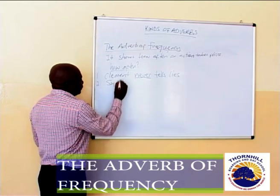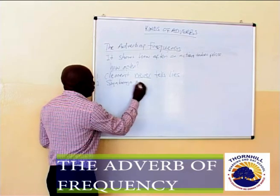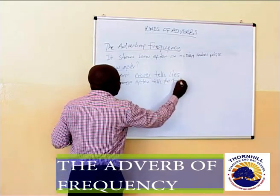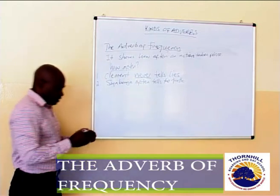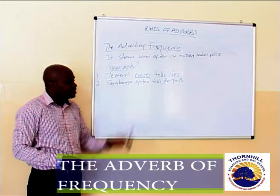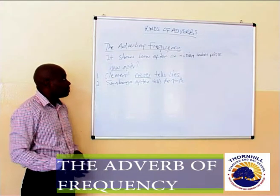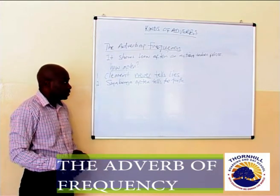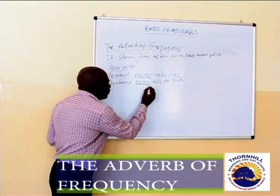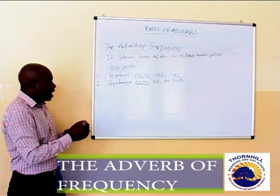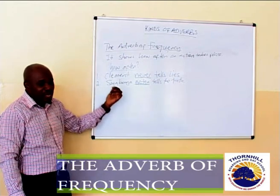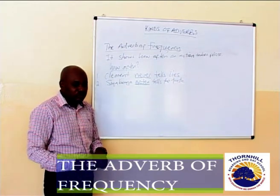The second example: Siabonga often tells the truth. Which word is the adverb of frequency? It is the word 'often.' The word 'often' is describing to us how the action of telling the truth happens where Siabonga is concerned.